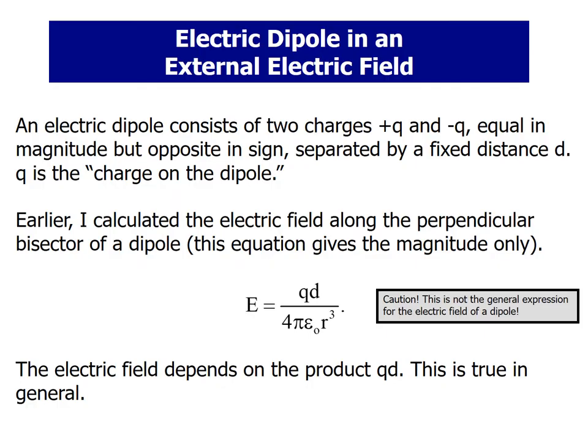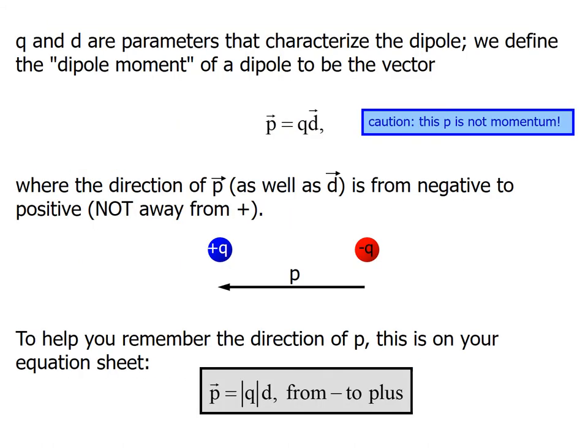An electric dipole consists of two charges, positive Q and negative Q, equal in magnitude but opposite in direction, separated by a fixed distance d. Q is the charge on the dipole. The electric field depends on the product Qd. This is the charge times displacement. This is the parameter that characterizes the dipole.